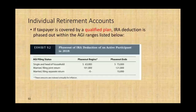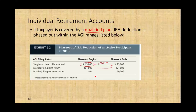If you are covered in a qualified plan, the IRA deduction phases out within AGI ranges. For single and head of household, the phase-out starts at $63,000 and ends at $73,000 — a $10,000 range. For married filing jointly, it starts at $101,000 and ends at $121,000. For married filing separately, it starts at $0 and once you make $10,000, you can no longer contribute — they really penalize you with married filing separately.